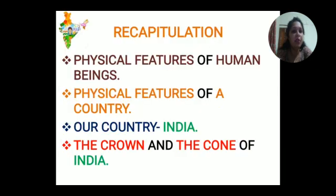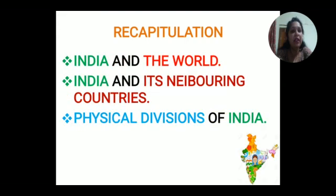The topics which we will discuss in this chapter are: physical features of human beings, physical features of a country, our country India, the crown and the cone of India, India and the world, India and its neighboring countries, and physical divisions of India.